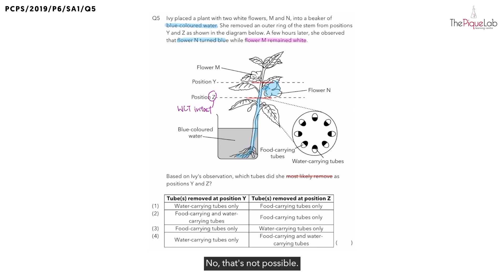No, that's not possible. Thus, we know that the food carrying tubes at position Y must have been removed as well. So, let us write this down together. At position Y, the food carrying tubes and the water carrying tubes were both removed.